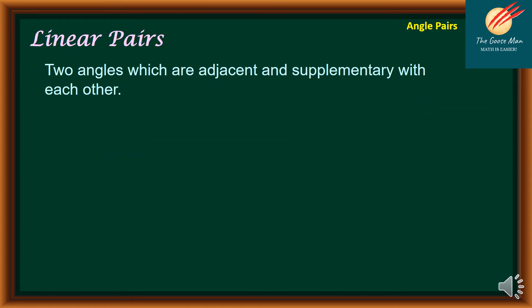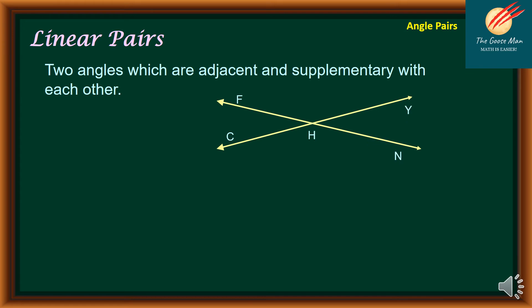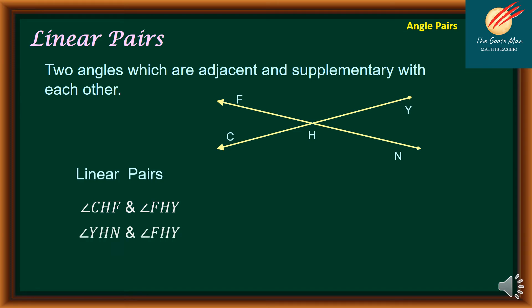The next definition is linear pairs. Two angles are a linear pair when they are adjacent and supplementary with each other. From our illustration, we can form the following linear pairs: angle CHF and angle FHY; angle YHN and angle FHY; angle CHF and angle CHN; and angle YHN and angle CHN.